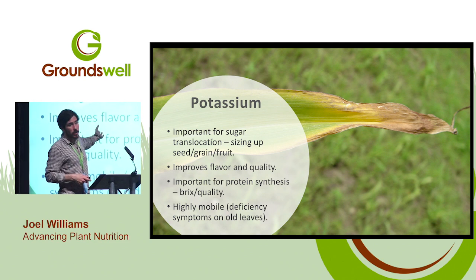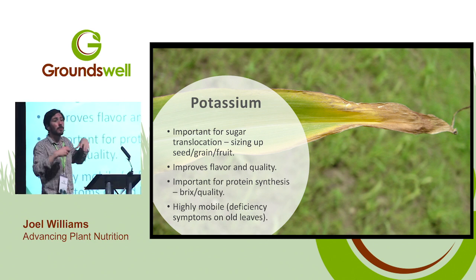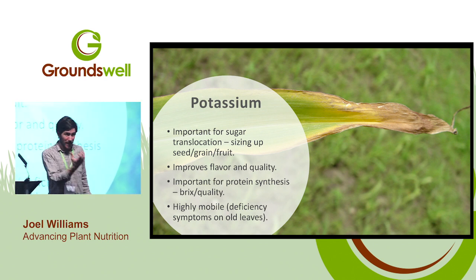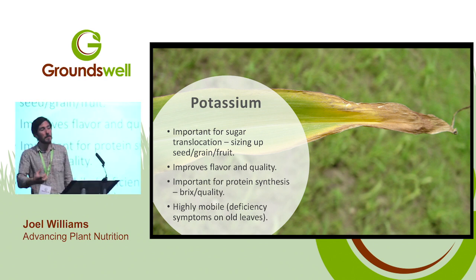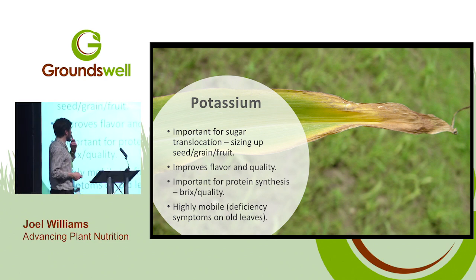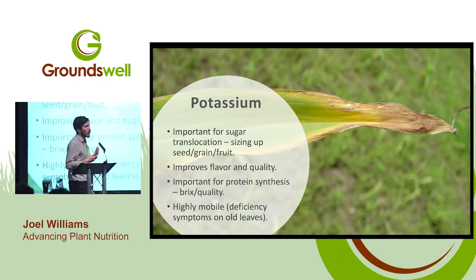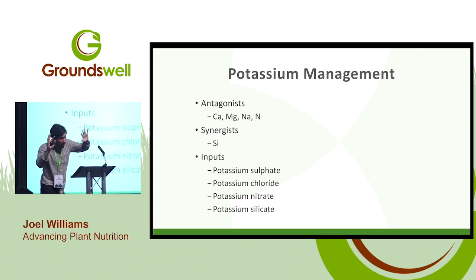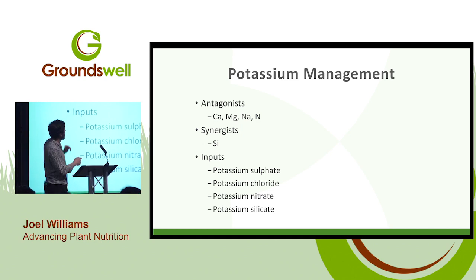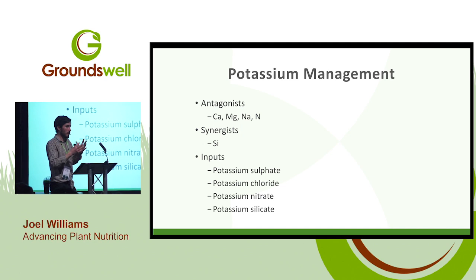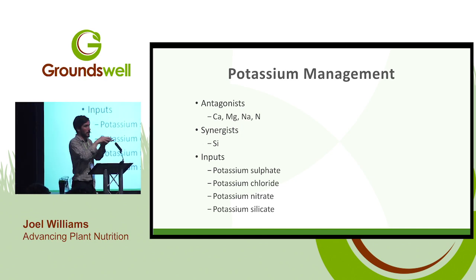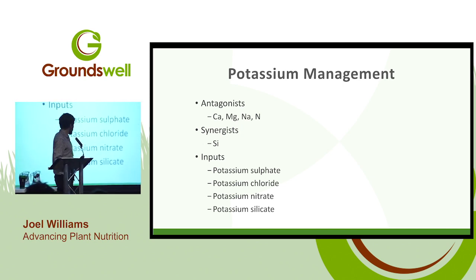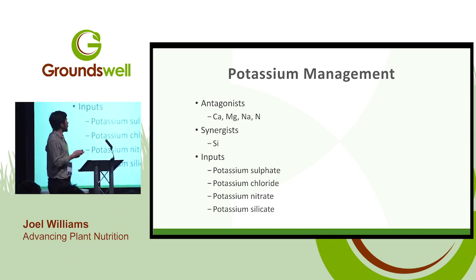Potassium is important for the translocation of sugars and carbohydrates — sizing up fruit and grain. When we're carrying sugars and carbohydrates to fruit and grain, that improves the taste, flavour, ripeness, size, and all those quality attributes. It also has a role in protein synthesis. It is a highly mobile mineral, so we'll typically see deficiency symptoms on older leaves. All of the other major cations are antagonists — calcium, magnesium, and sodium, as well as nitrogen. Silicon works very synergistically with potassium, forming a compound that really helps potassium be utilised. Options include potassium chloride, potassium sulphate, potassium nitrate, and potassium silicate — that last one gives you both synergists in one.